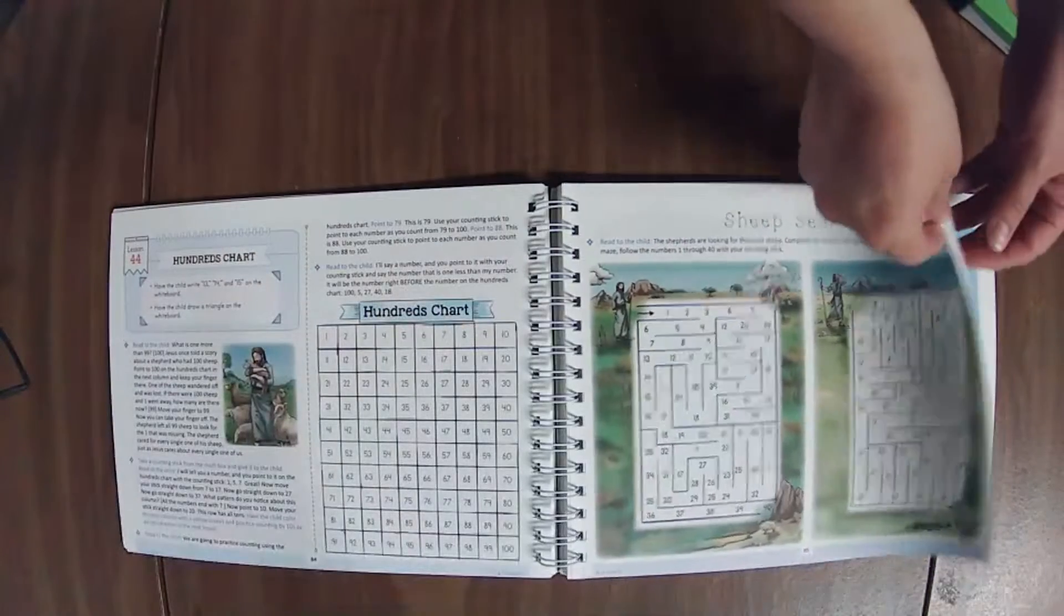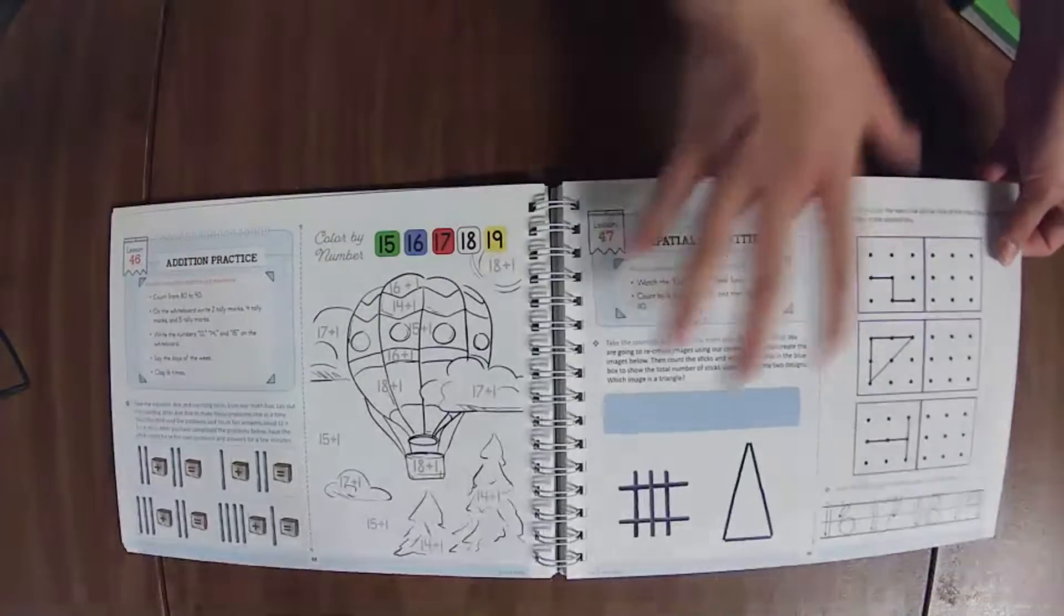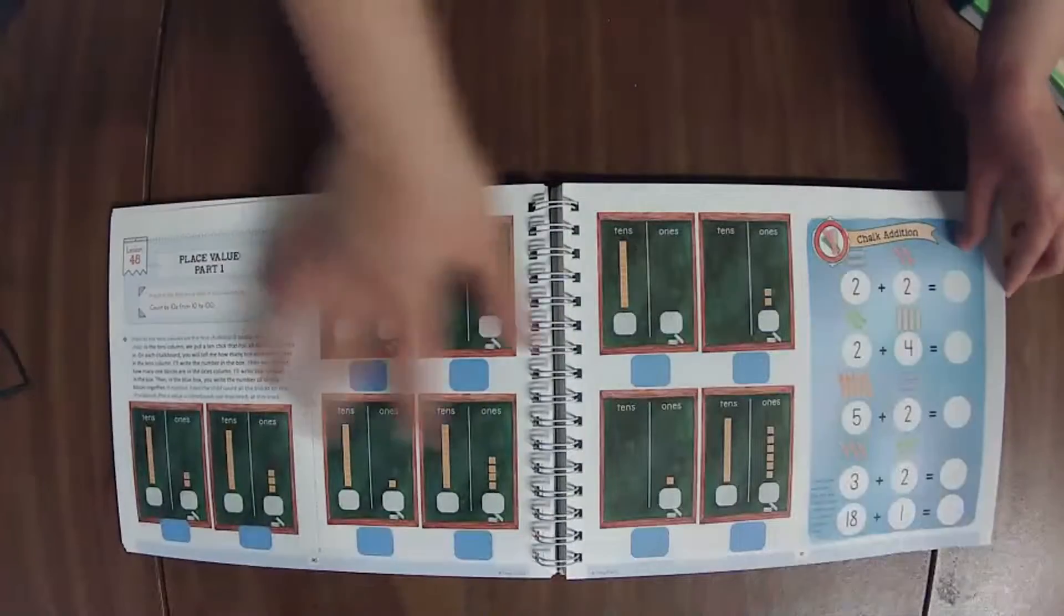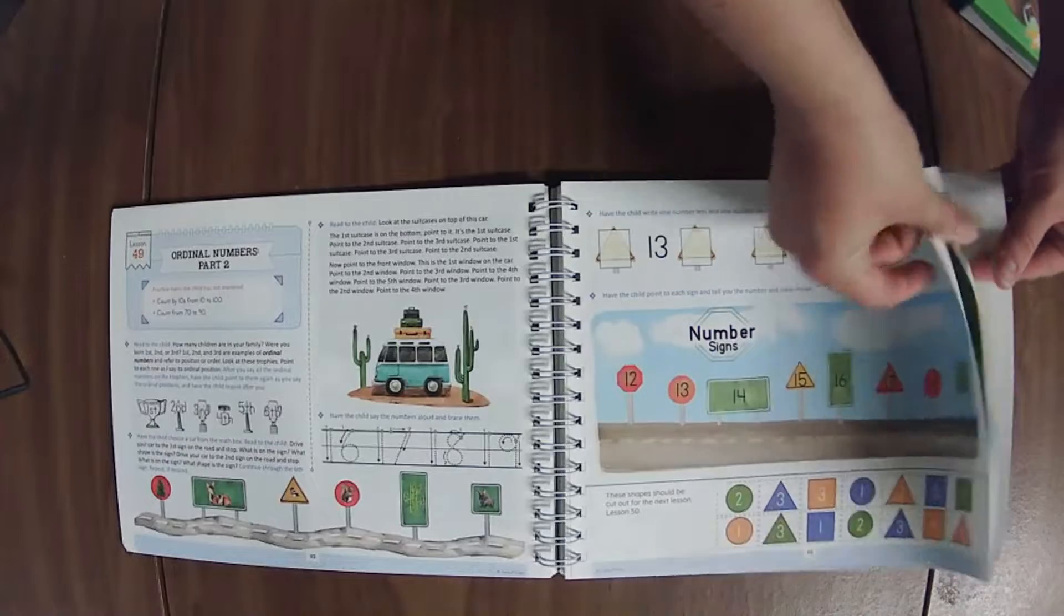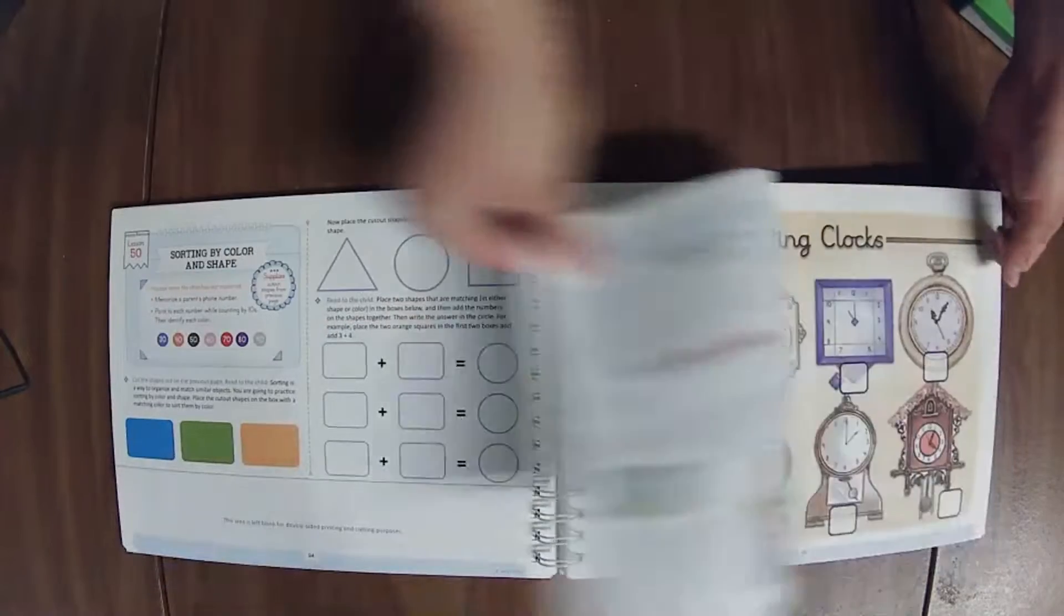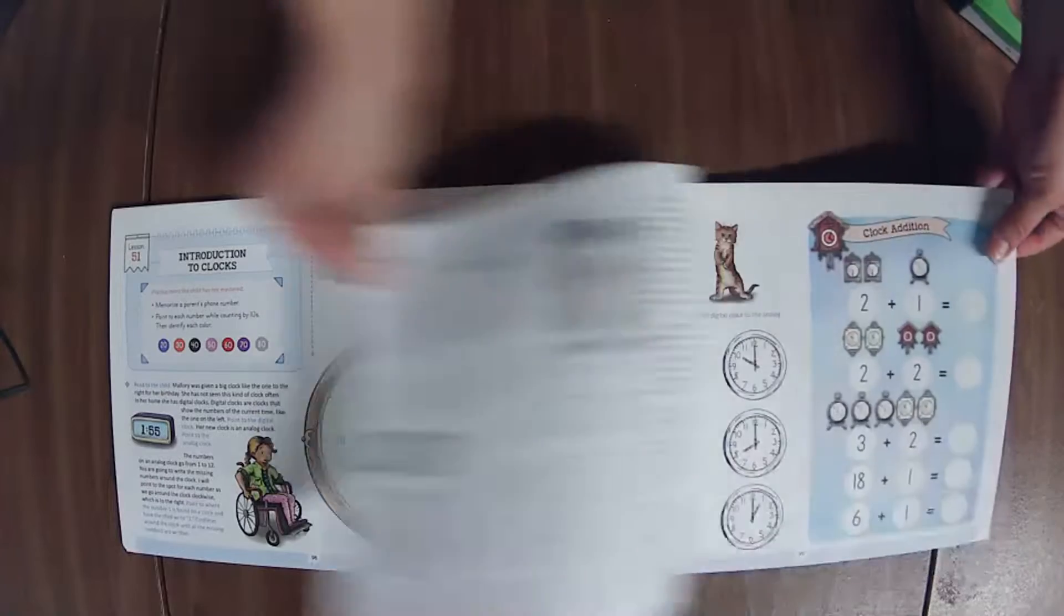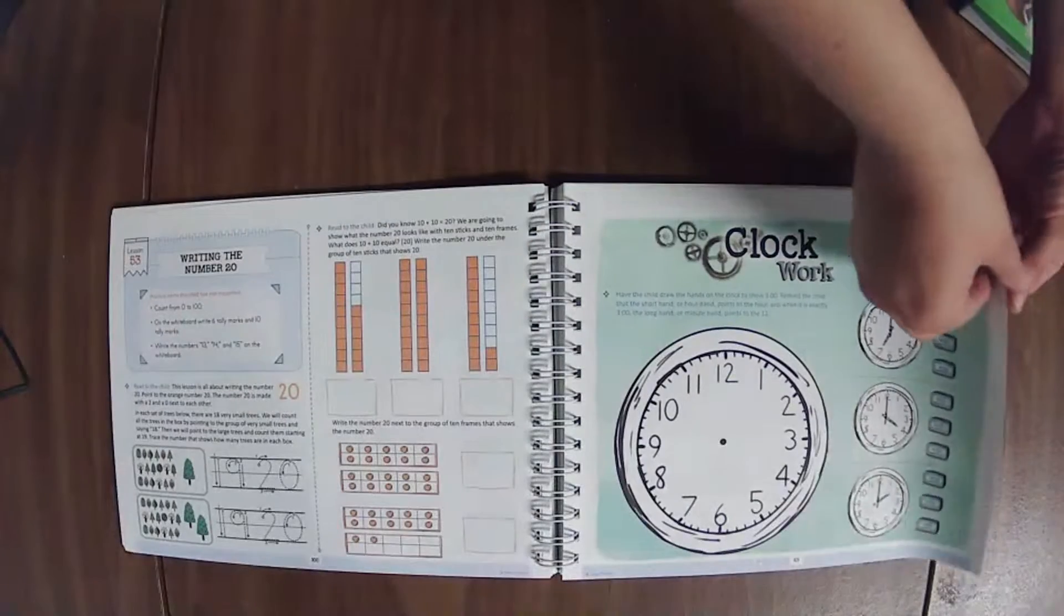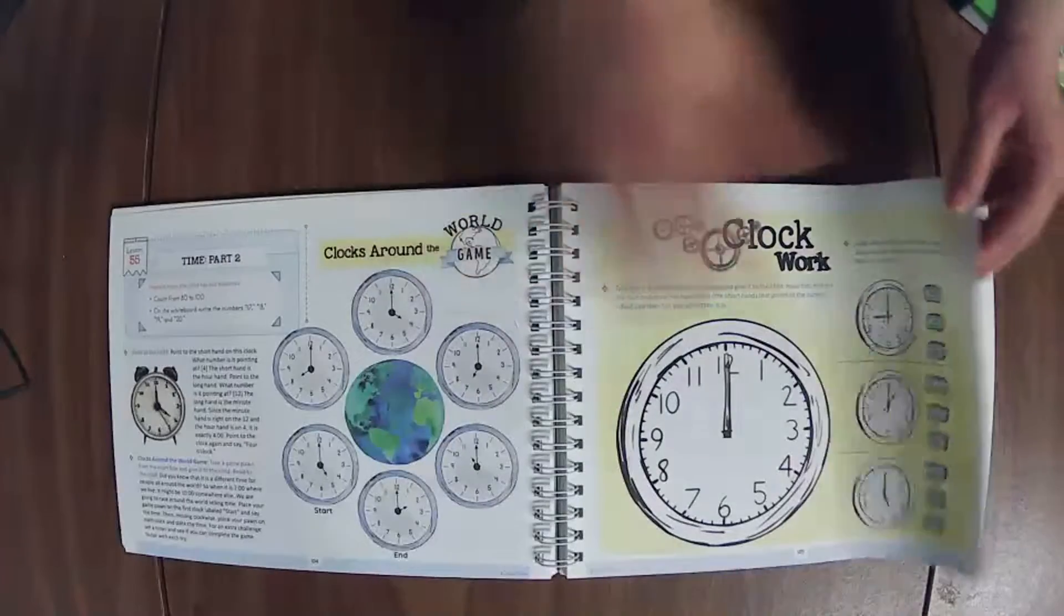And how they've reduced the amount of moving parts in it and I really appreciate that. Moving parts in the sense of like, go grab this book or this thing, do this piece. It's all right here on the page for you. What you're going to need is right here on the page minus sometimes a couple little things you need to grab.